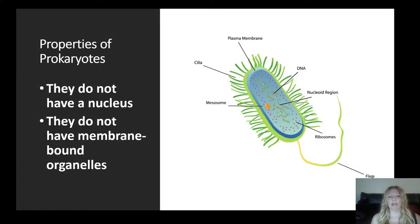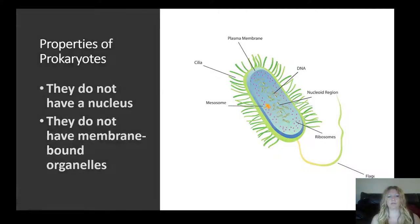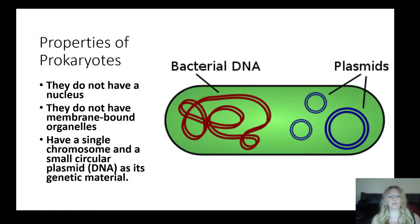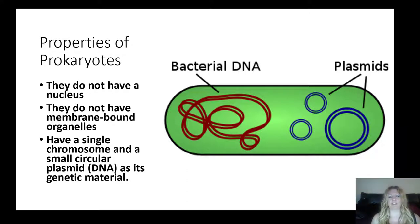To be classified as a prokaryote, the organism must not have a nucleus and must not have membrane-bound organelles. They also have bacterial DNA in a single circular chromosome, and they have plasmids, which are additional small circular DNA.